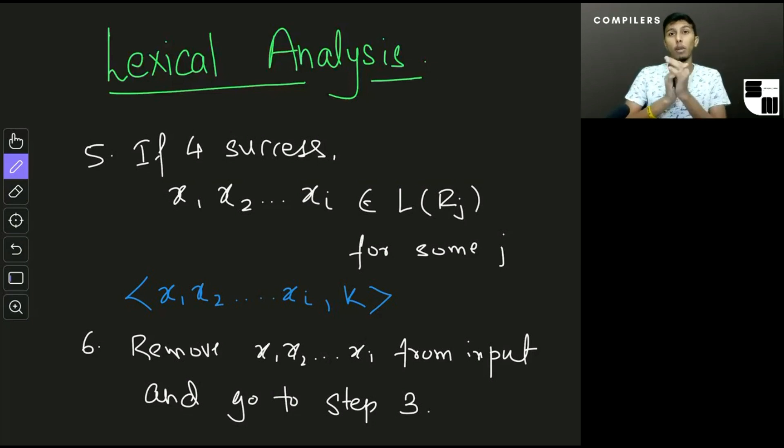So which means what if x1, x2 and so on up to xi belongs to L of Rj and x1, x2 and so on up to xk belongs to some L of Rm. So what if two different length strings belong to, are still part of the language. So these are some of the ambiguities that will still come up, but we'll talk about them in detail in the next video.